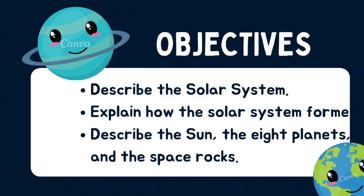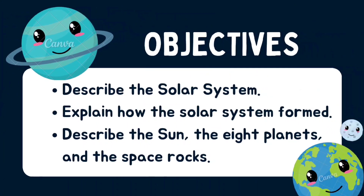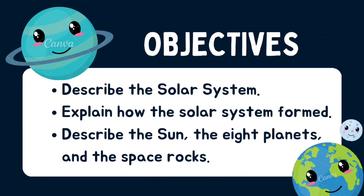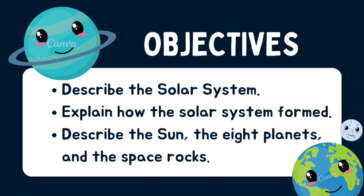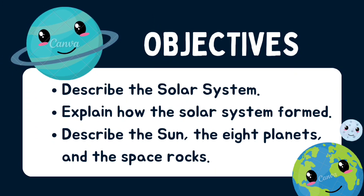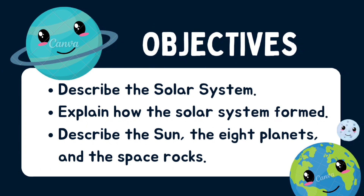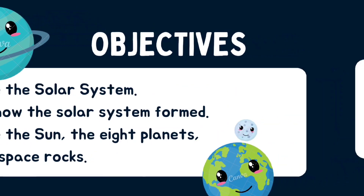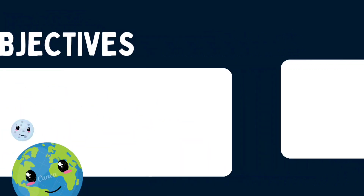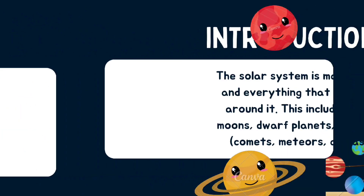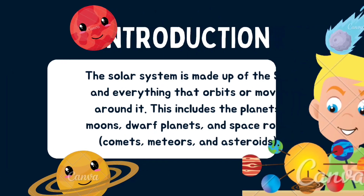The objectives we are going to cover in this video: number one, describe the solar system; number two, explain how the solar system formed; number three, describe the sun, the eight planets, and the space rocks. All these topics we are going to cover in this video, so I hope you are all excited, kids.